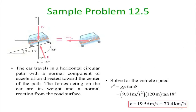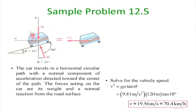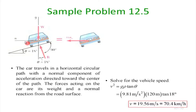To find the rated speed: take the car with weight W and no friction force — only the normal reaction R acts. Because the road is banked at angle θ, R has a horizontal component. Writing Σfy = 0: R = W/cosθ. The horizontal component R·sinθ provides the centripetal force: R·sinθ = (W/g)·(v²/ρ).